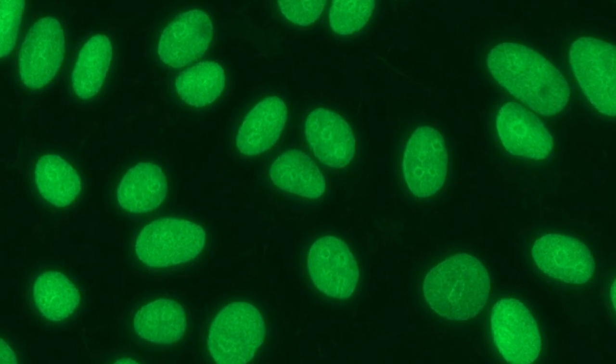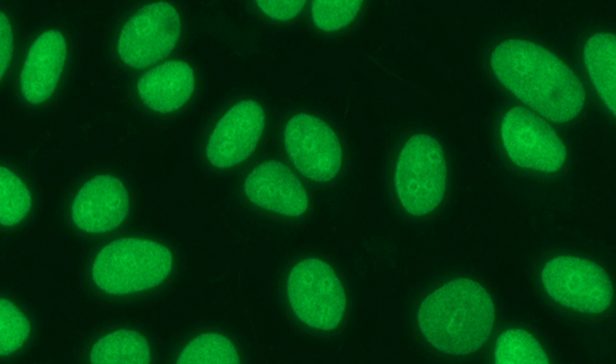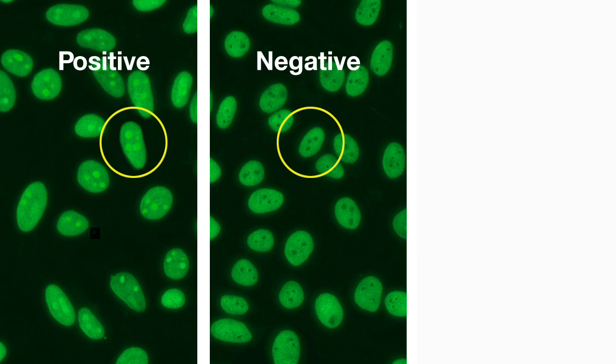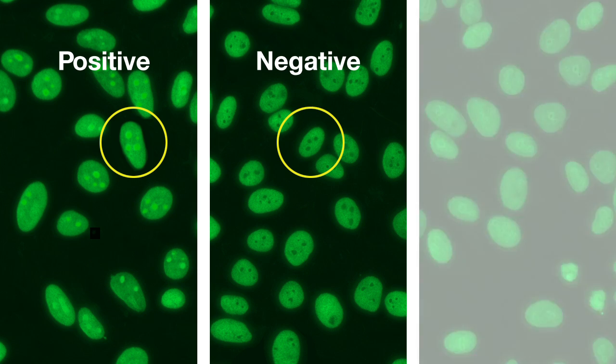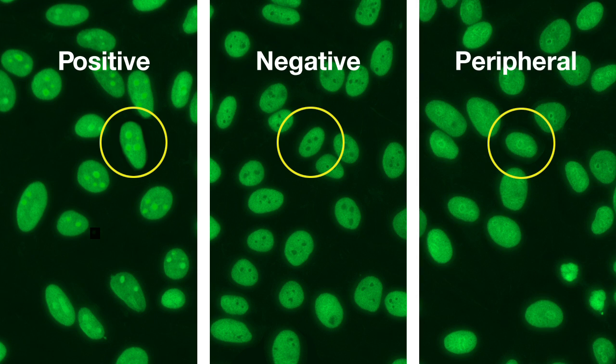Next, look at the nucleoli. The size and number of nucleoli vary depending on where the cell is in the cell cycle. Staining can also be variable — it could be positive, negative, and in some samples, show a peripheral staining.